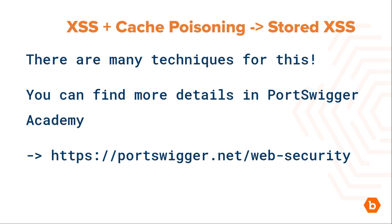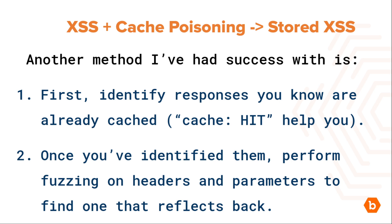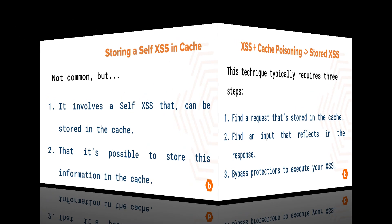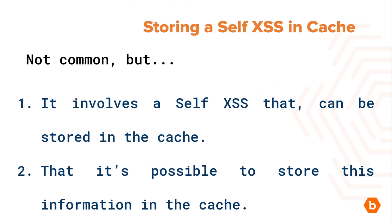There are many techniques for this — you can find more details in PortSwigger Academy and in this video's description. Another method I've had success with: identify responses you know are already cached, then perform fuzzing on headers and parameters to find one that reflects back. This technique typically requires three steps: find a request that's stored in the cache, find an input that reflects in the response, and bypass protection to execute your XSS.